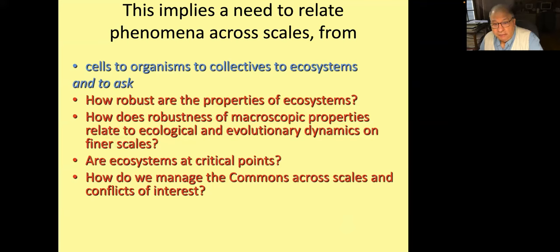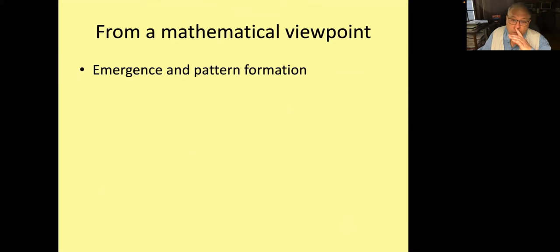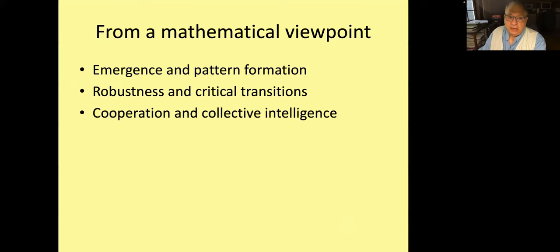And to ask questions like: How robust are the properties of ecosystems? How does the robustness of the macroscopic properties relate to ecological and evolutionary dynamics on finer scales? Are ecosystems at critical points? How do we manage the commons across scales and conflicts of interest? For those working on different systems, you could have exactly this same list. To simplify from a mathematical point of view, I'm going to talk about three things: emergence and pattern formation, robustness and critical transitions, and cooperation and collective intelligence.